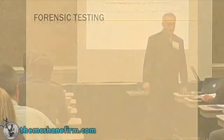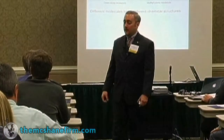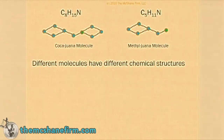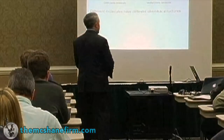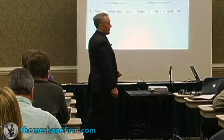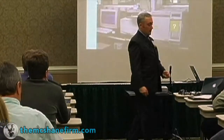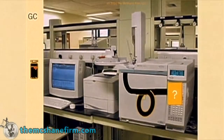What you have to understand is that molecules have different shapes and forms based upon their different bonding. On the left, we have cocaine molecules. On the right, we have marijuana molecules. So different things have different chemical structures. If you've never seen it, this is a gas chromatograph.